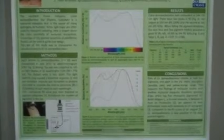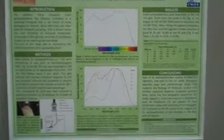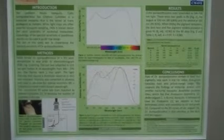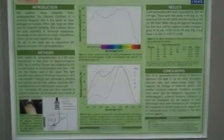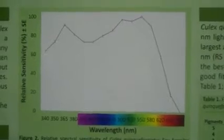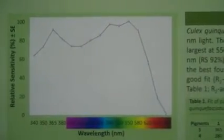I used electroretinogram testing to measure the insect's responses at different wavelengths, and I plotted that on the graph that you can see here. This graph shows a peak in sensitivity in the UV range, and then a later peak here in the green range.